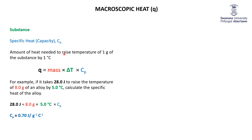That's when we're talking about a substance, and very often that substance will be water. The specific heat of water is 4.184 joules per gram per degree Celsius.